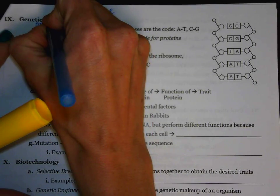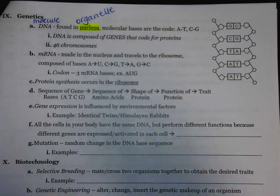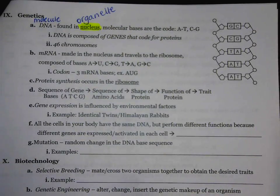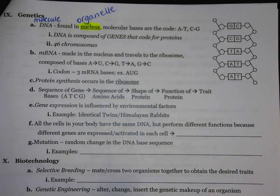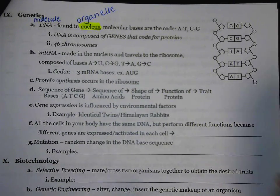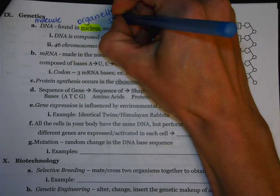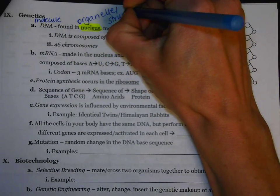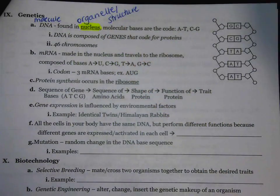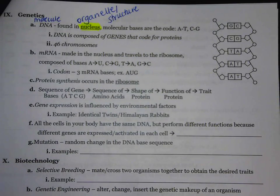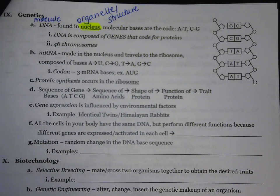DNA is considered a molecule. It's going to be found in the nucleus. The nucleus is a specific type of organelle or structure. A lot of times they refer to this as the brain of the cell, because it really is the control center and it determines what's going on in the rest of the cell.